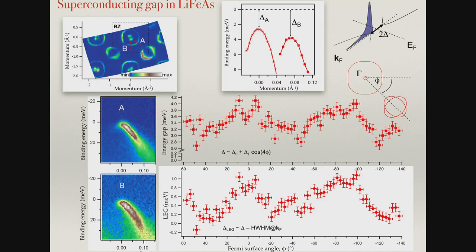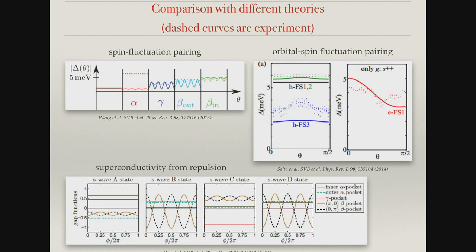This was also checked in iron-based superconductors in the case of lithium iron arsenide. We determined the gap along all the Fermi surfaces with relatively good precision at that time, and provided the gap function to leading groups in the field. Actually, within three theories — spin fluctuation, orbital spin fluctuation, and purely electronic — it was possible to explain our data. For me this is a clear signature that our experiment should be more precise, and I will come back to this point at the end of this talk.